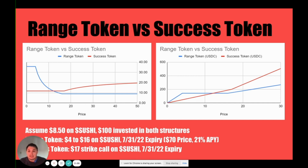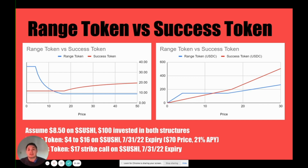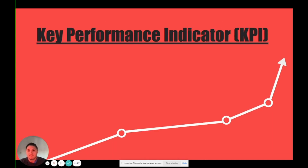The range token and success tokens have slightly different payouts. Here's a quick payout function graph for any of the financial engineers to look at. More details and more parameters around how to set up a range token and success token can be found on UMA's website or through one of the sessions that we have following this.